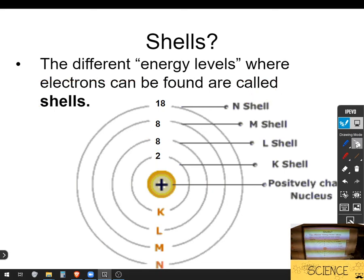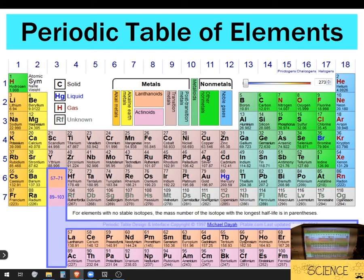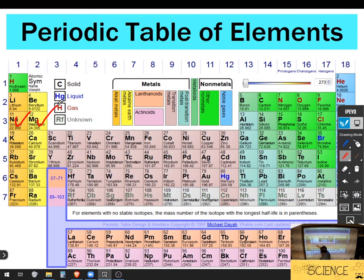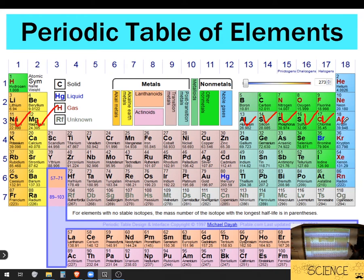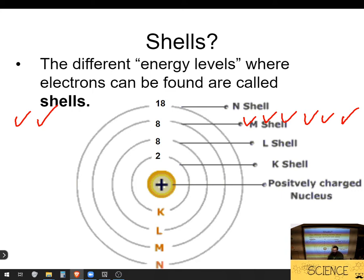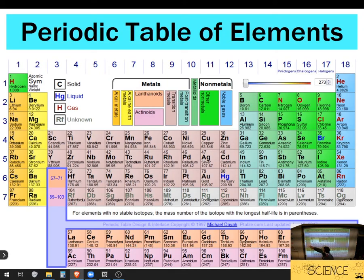If we move out from there, look at the next one. Third row, one, two, three, four, five, six, seven, and eight. Eight, and that's right. The third shell holds eight. I'll bet you can tell me how many elements are in the fourth row of the periodic table. It's 18.